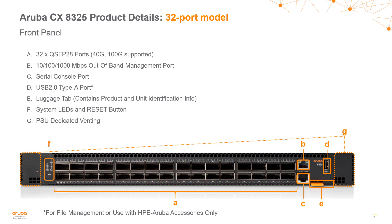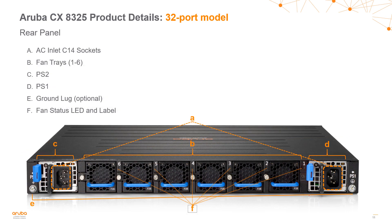On the 32-port model, this is 32 ports of 40/100 gig QSFP28. We've got the 32 ports in the center of the switch. On the right, we can see the RJ45 management and console ports as well as a USB port for file transfer and the CX mobile app. We also have the air inlets like on the 48-port model, LED indicators on the left, and the luggage tag on the lower right. On the rear of the 32-port model, the two power supplies leverage the C14 socket and come installed and already populated, as well as the fan trays.